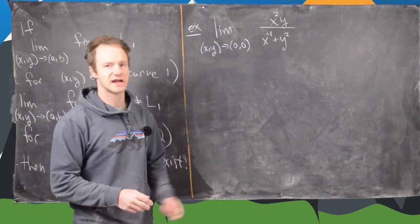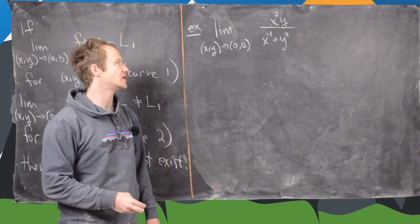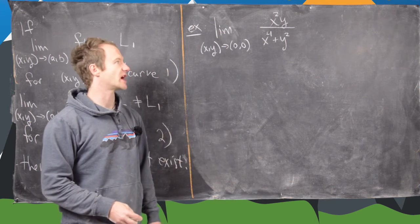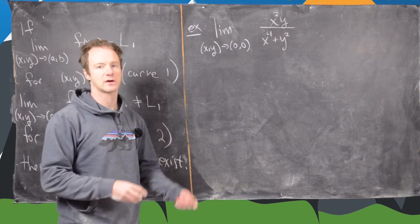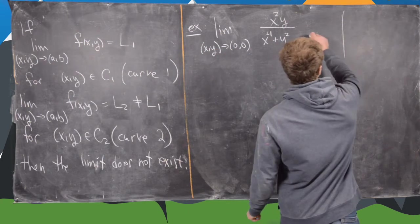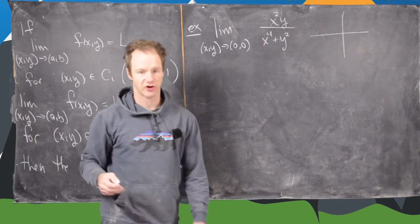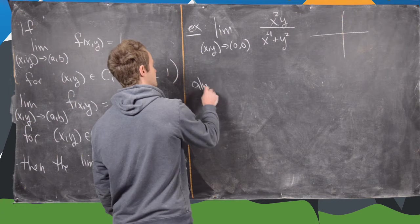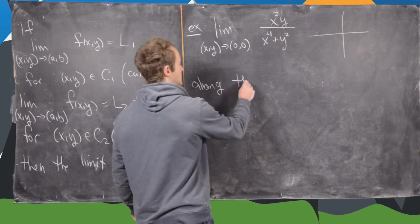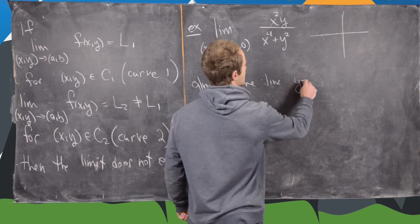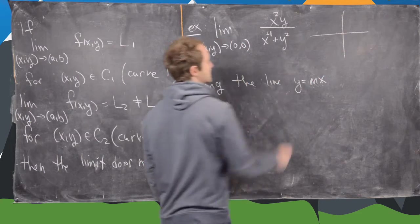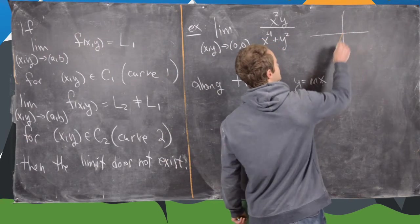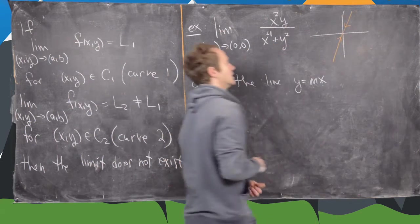For our last example, we want to look at the limit as XY goes to the origin of x squared y over x to the fourth plus y squared. I'll let you guys check that the limit along the coordinate axes are zero. So what we really need to check is along some other curves. Let's first look at the line y equals mx. So this is along the line of some arbitrary slope.